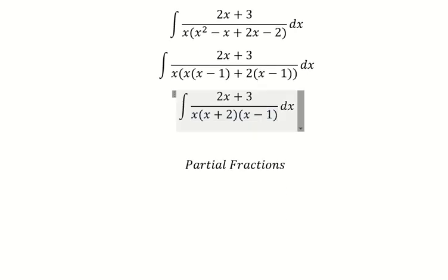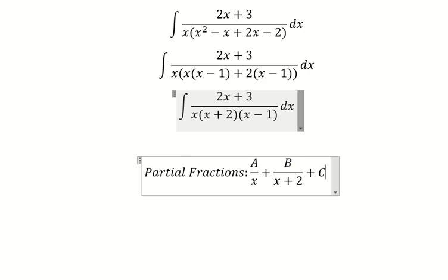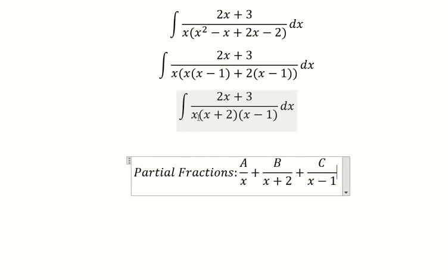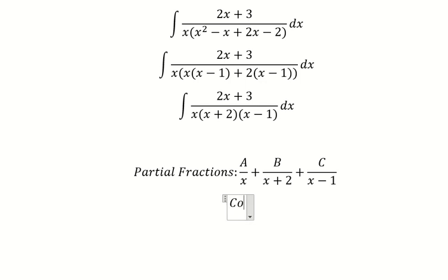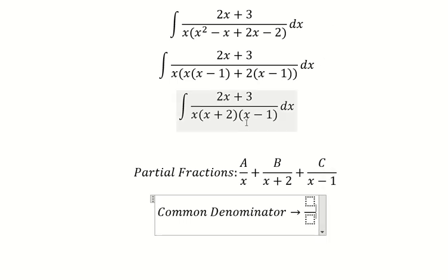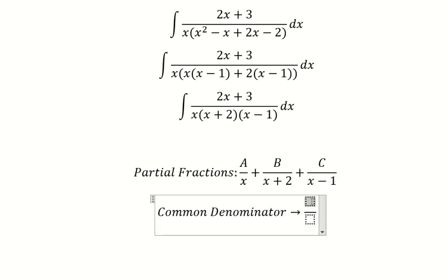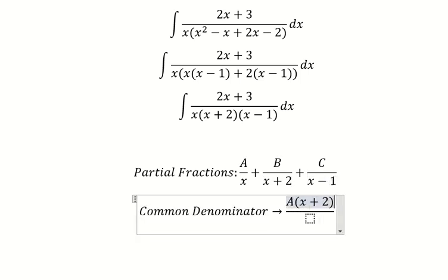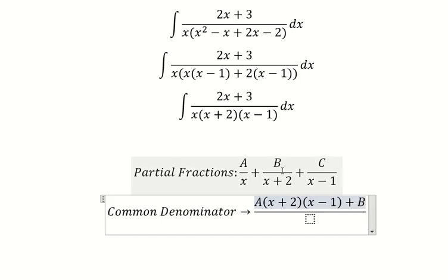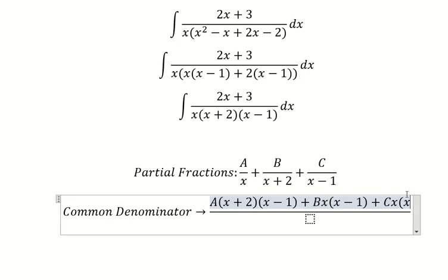We set up: A divided by x, B divided by (x plus 2), and C divided by (x minus 1), because we have three factors. We find the common denominator. For A, the missing factors are (x plus 2) and (x minus 1); for B, the missing factors are x and (x minus 1); for C, the missing factors are x and (x plus 2).